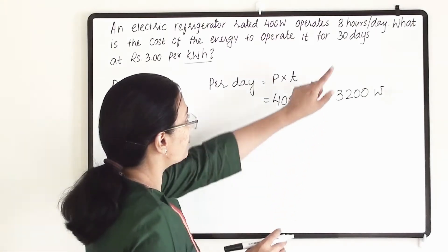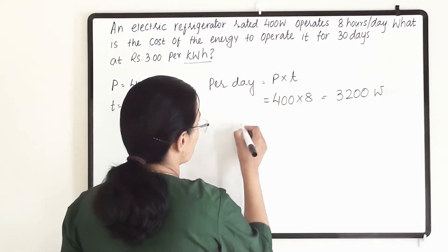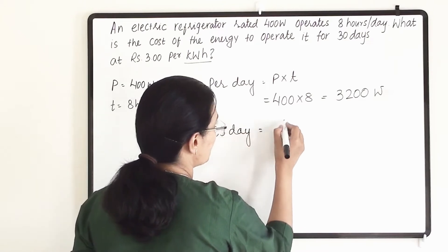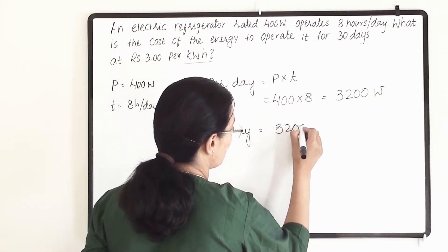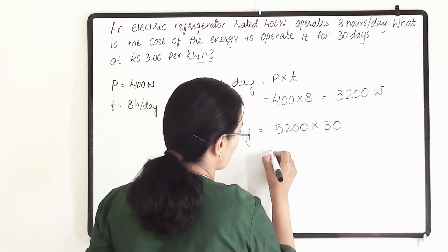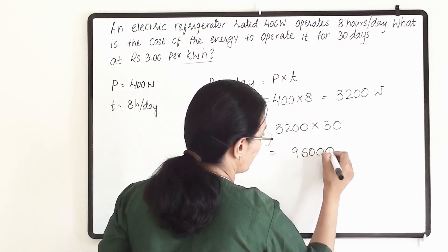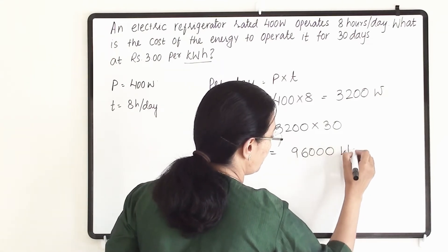Now we have to find out for 30 days. So for 30 days the energy consumption will be 3200 into 30. So it will give us 96000 watt hour.